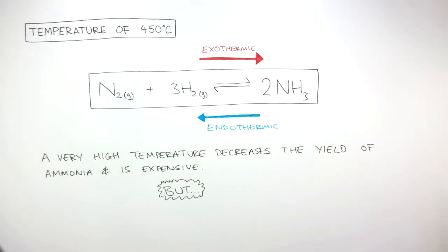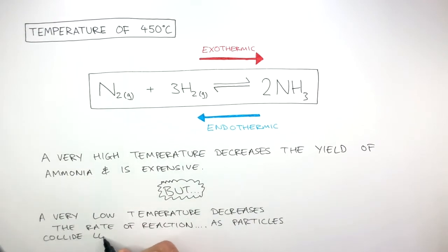But a very low temperature decreases the rate of reaction as particles collide less frequently and have less activation energy. Therefore, a compromise of 450 degrees Celsius is used.